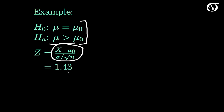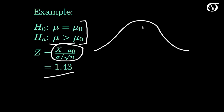Suppose we carry out the sampling and we get a value of our test statistic of 1.43. To find my p-value, I'm going to draw out my standard normal curve, because this is the distribution of the test statistic if the null hypothesis is true. Zero is here in the middle, and we got a test statistic of 1.43, which is over here somewhere.